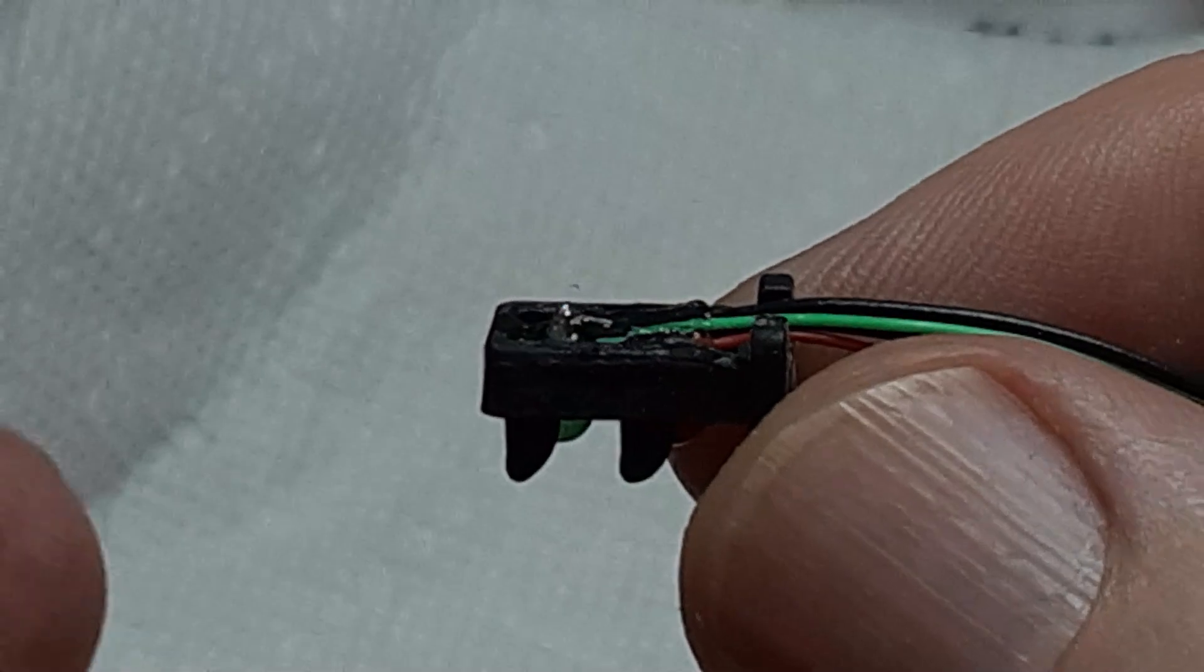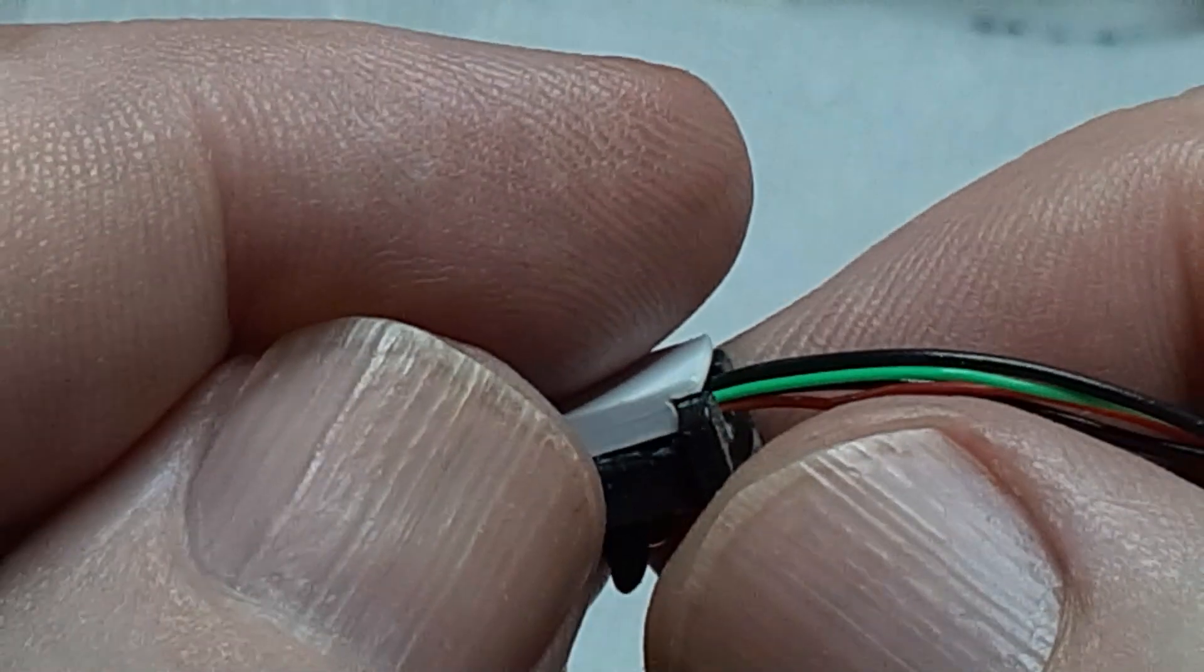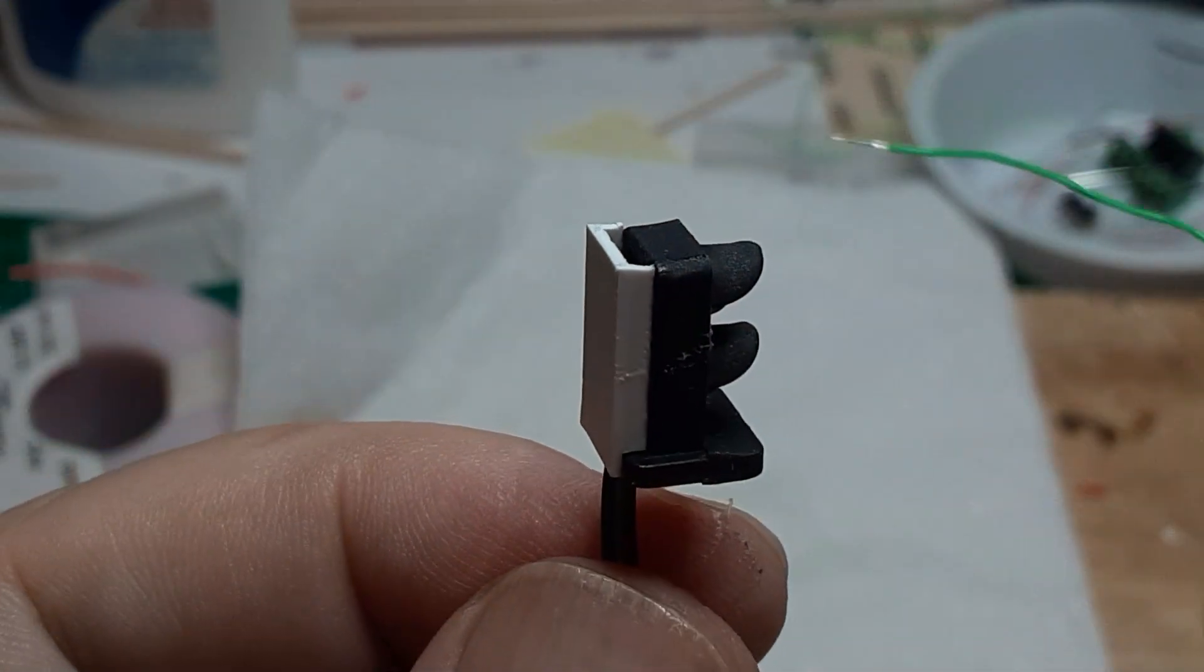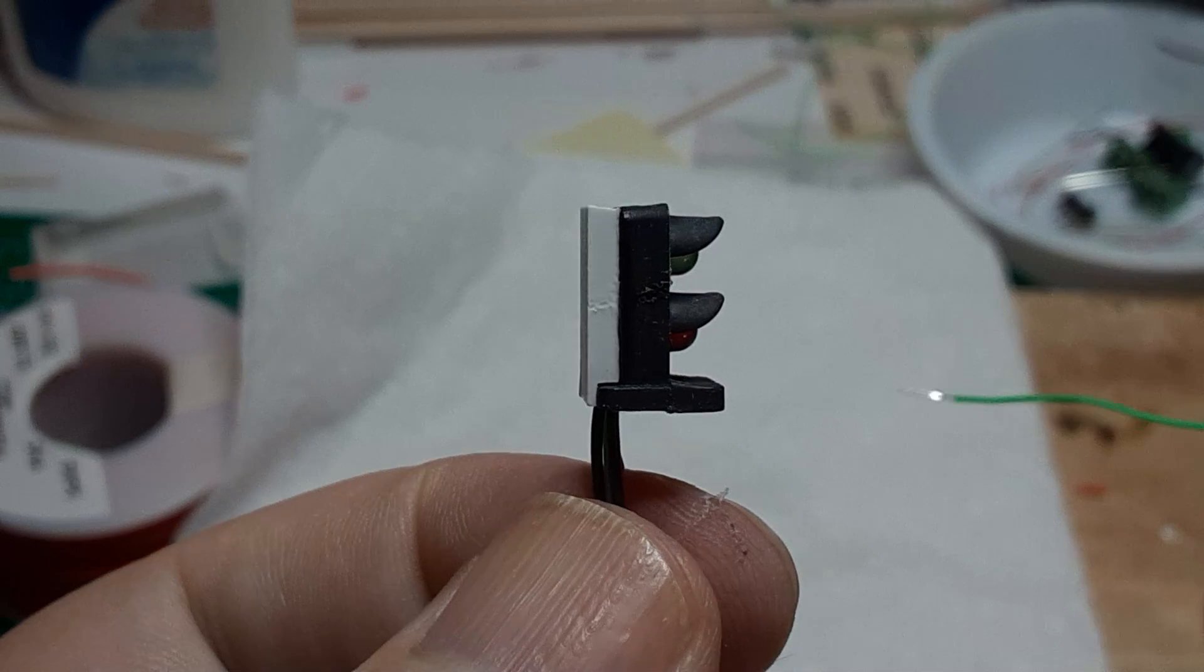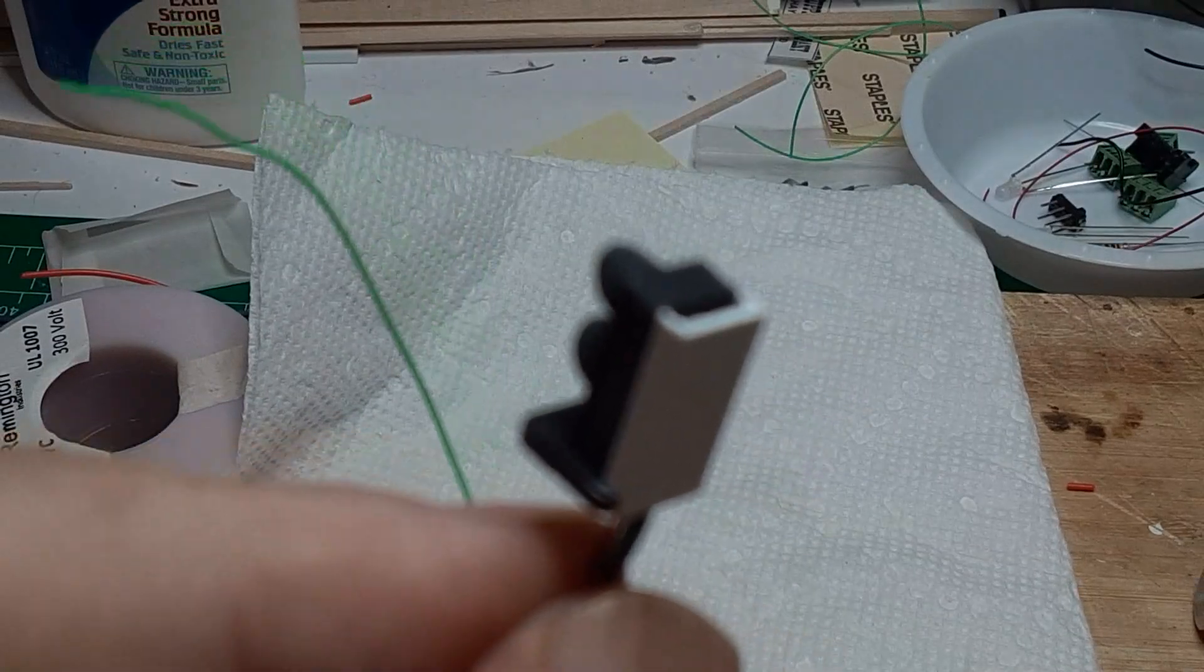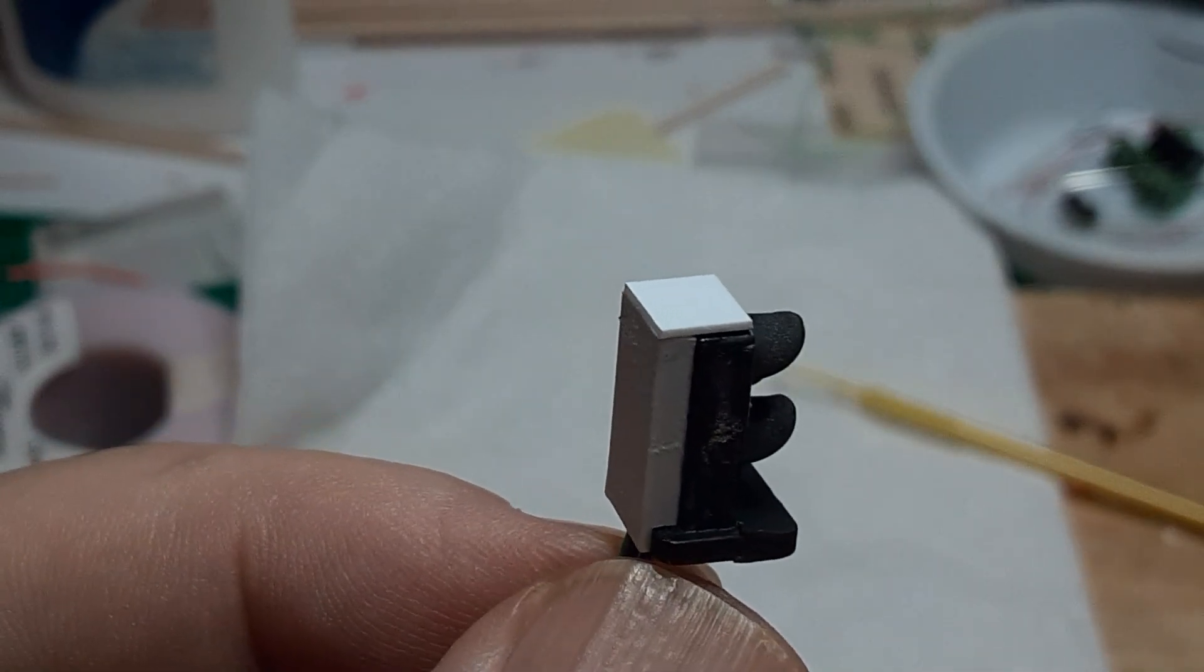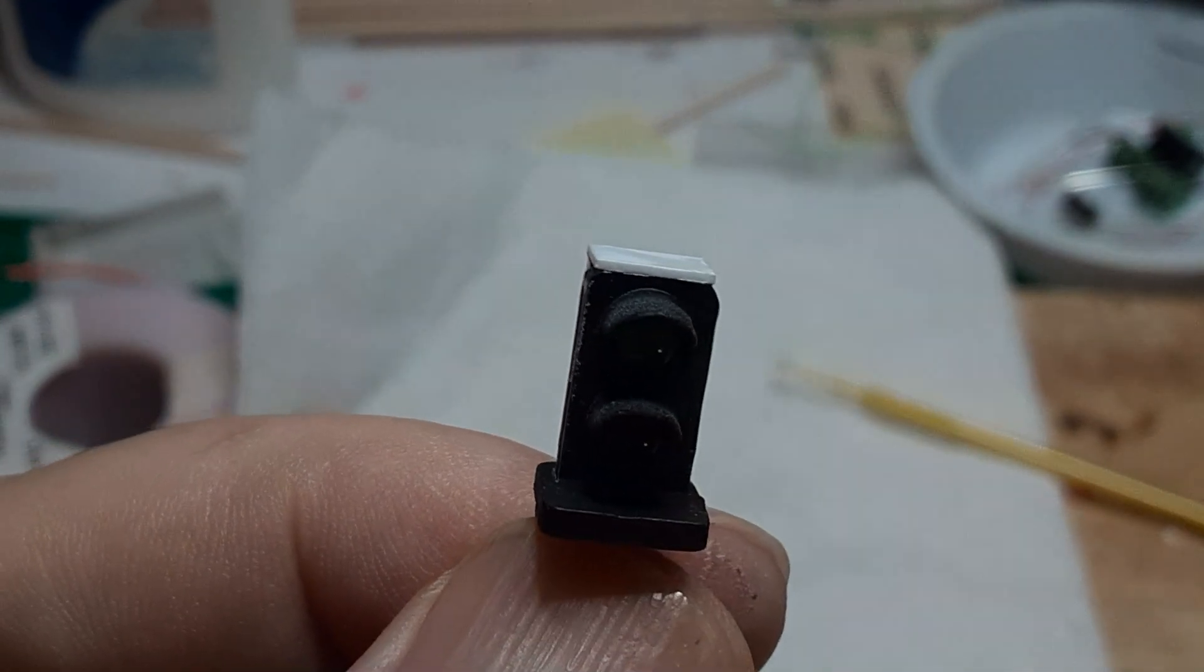Next, I cut a piece of 1/4 inch channel to length, and glue it to the back of the signal head, allowing the wires to extend out the bottom. Then I cut a piece of twenty thousandths by 1/4 inch styrene to length, and glue it to the top of the signal. This covers the gap between the signal head and the channel, and creates the top of the signal cabinet.